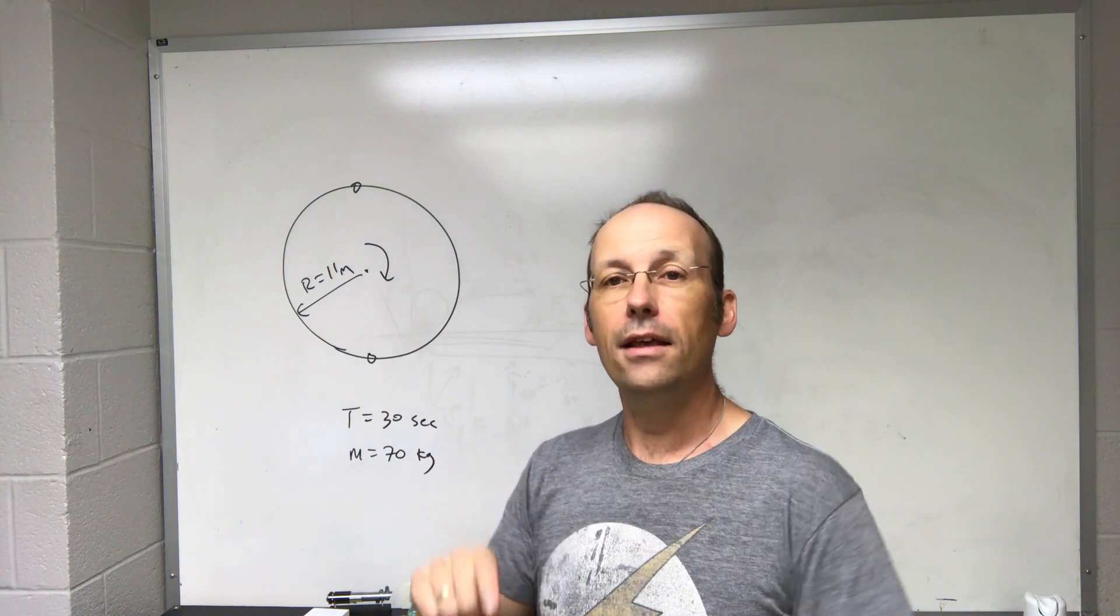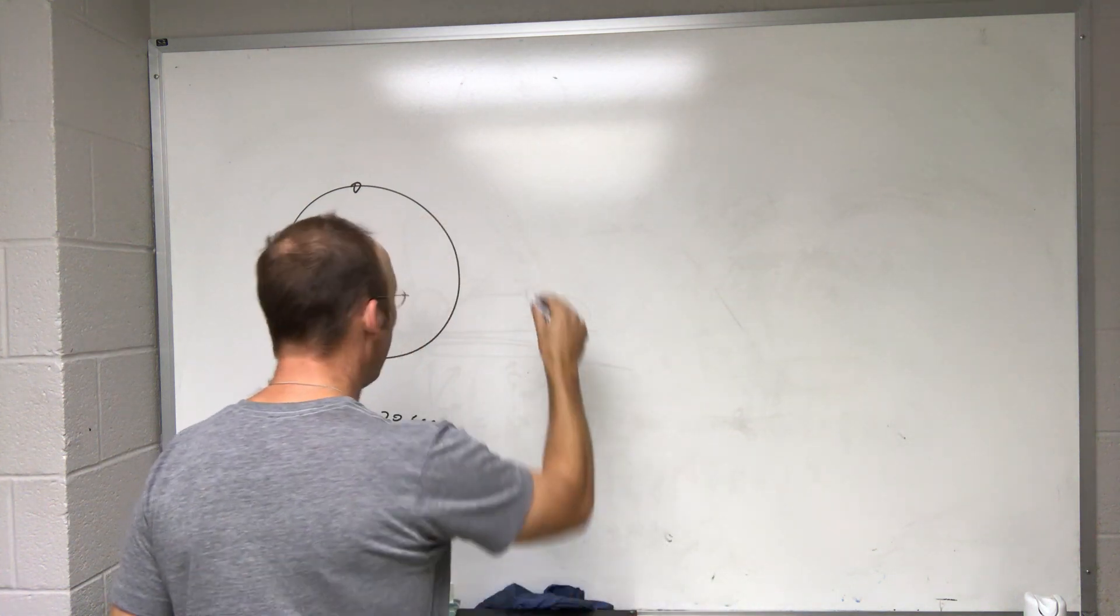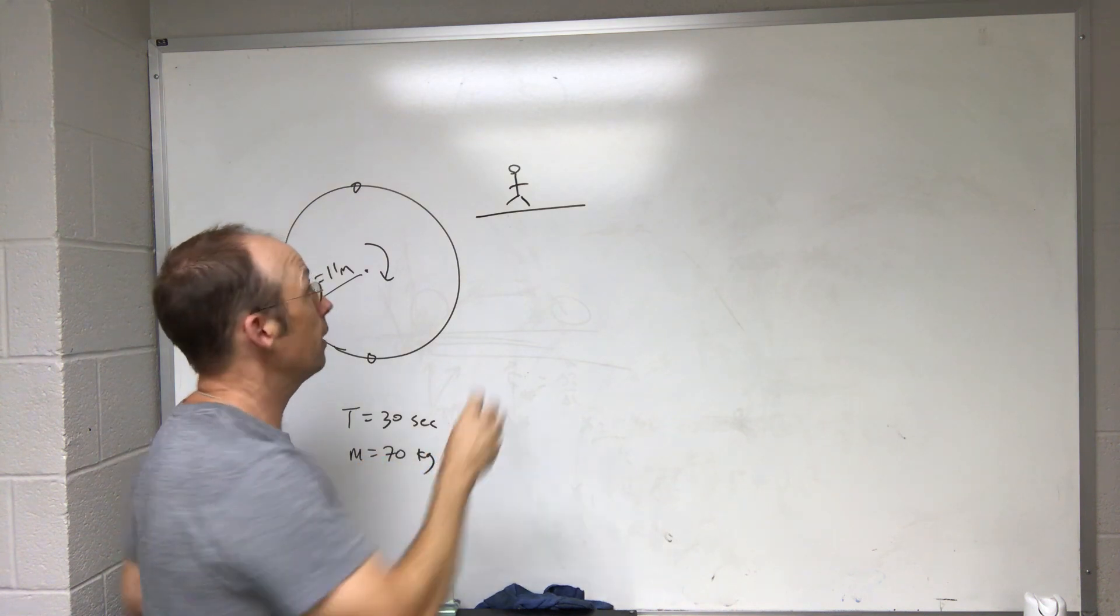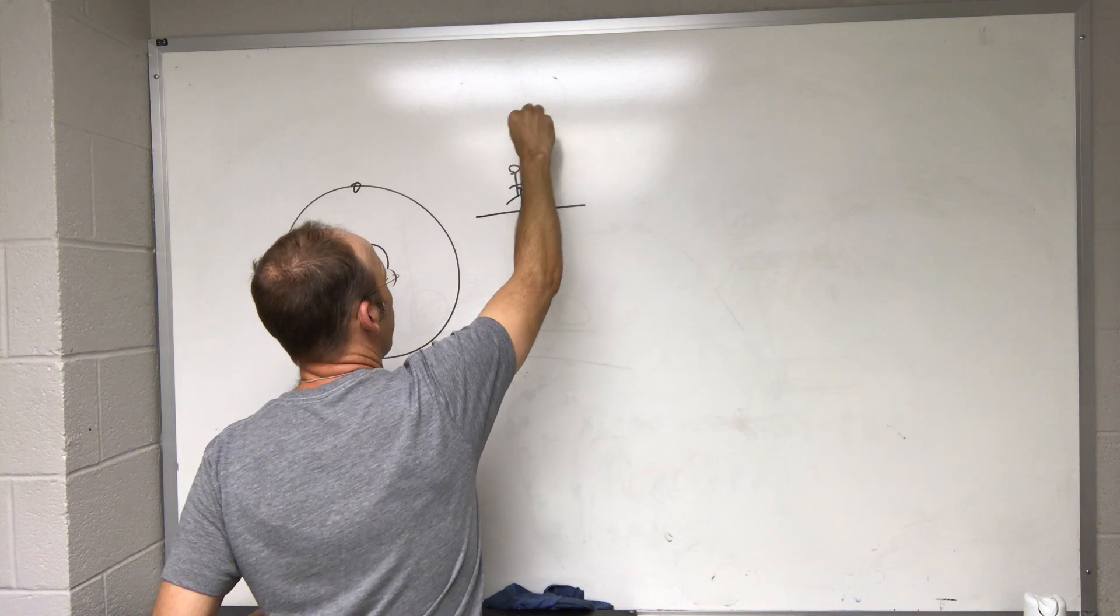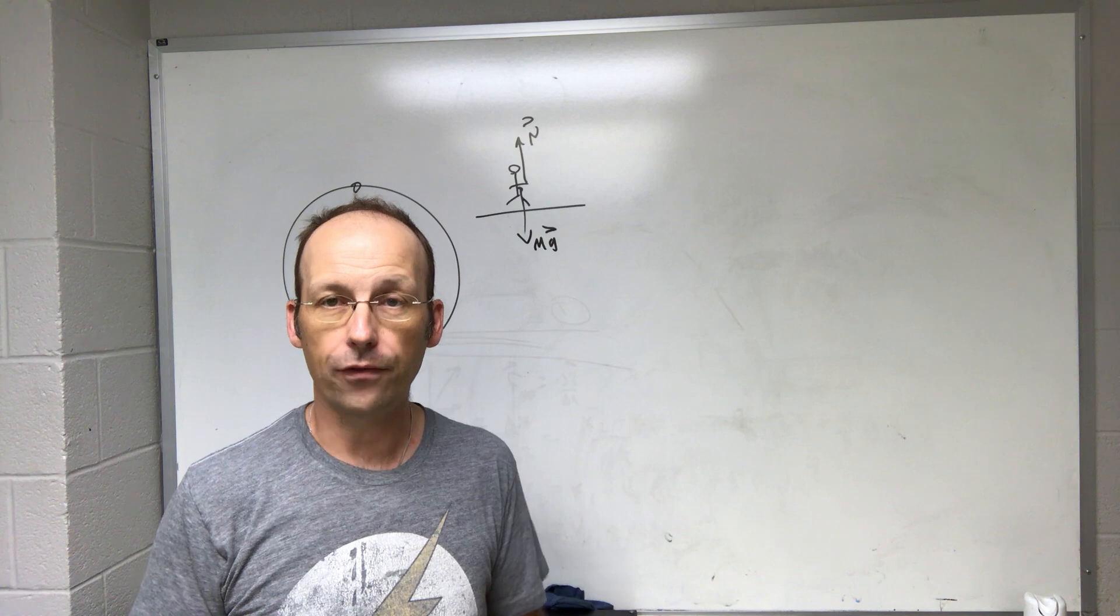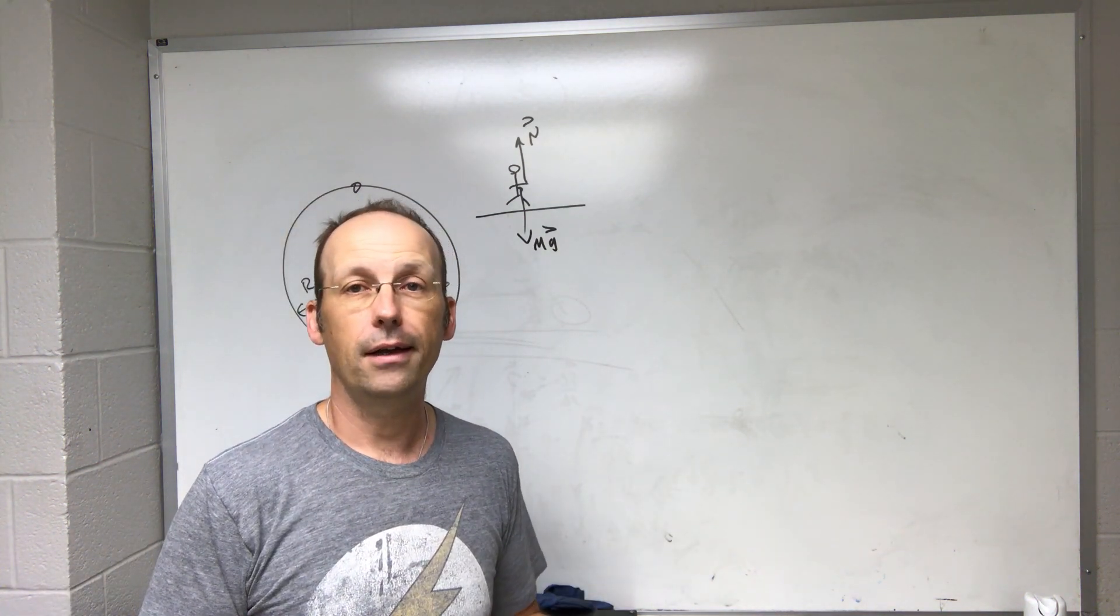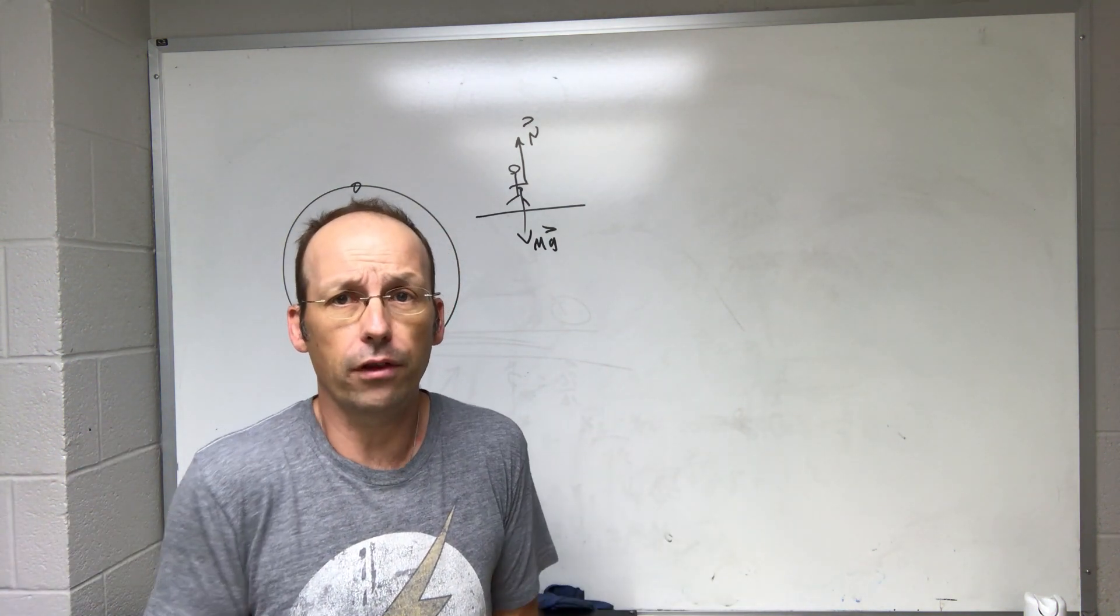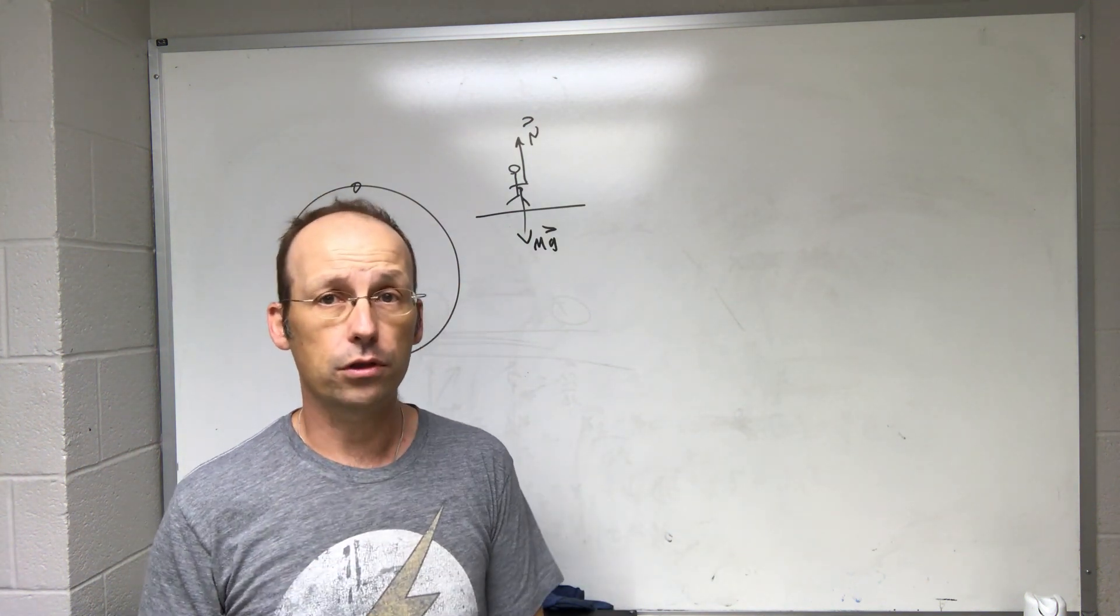So the first thing is, what is apparent weight? If I have a person standing on the ground, there's two forces. There's a gravitational force pulling down and the normal force pushing up. It turns out that the gravitational force is not what we feel. What we instead feel is the normal force. The normal force is the apparent weight. Gravity pulls the same on all parts of our bodies. We don't really feel it. We only feel that differential force of things pushing on us.